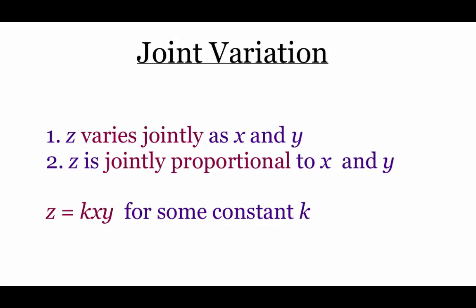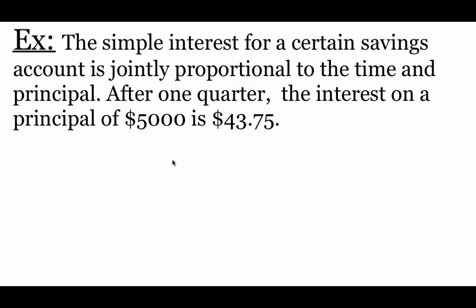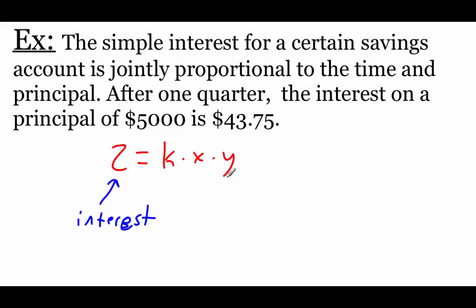The last example deals with joint variation. We say z varies jointly as x and y, or z is jointly proportional to x and y. The equation is z equals k times x times y. Here, simple interest for a savings account is jointly proportional to time and principal. After one quarter, the interest on a principal of $5,000 is $43.75. So z represents interest, x represents principal, and y represents time.